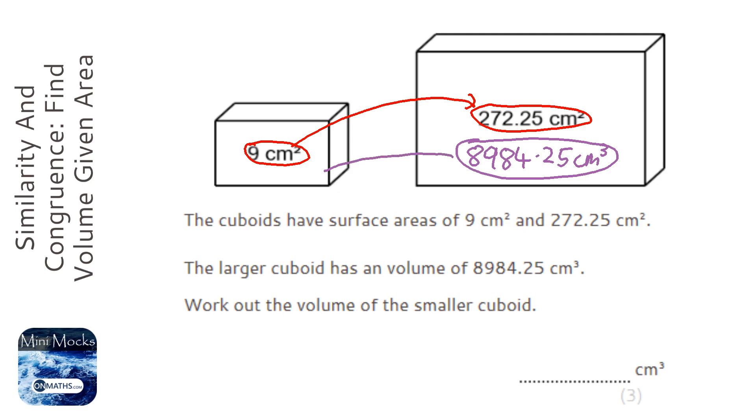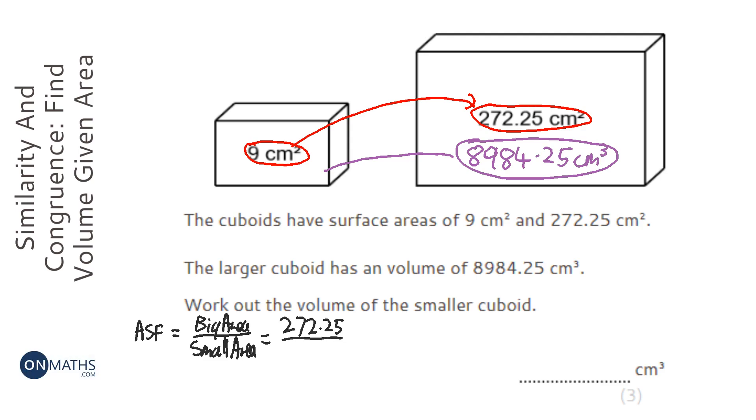Okay, so the first thing to do is work out the area scale factor, since we're given two areas, and that is the big area over the small area, which is 272.25 over 9. So I'll get my calculator, 272.25 over 9 is 30.25.